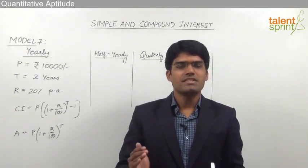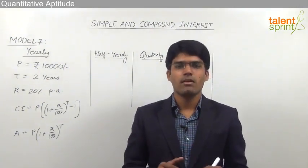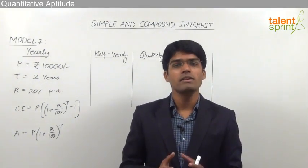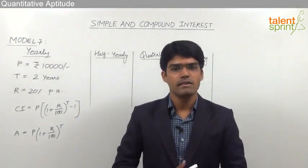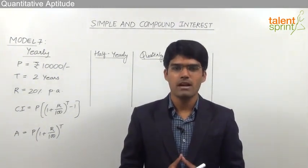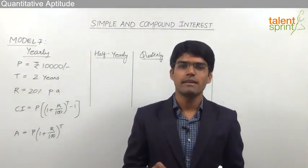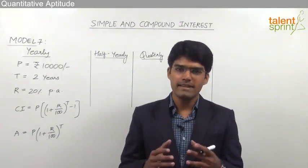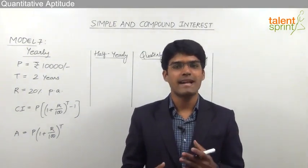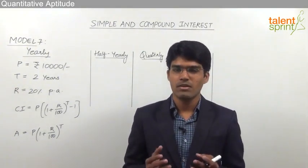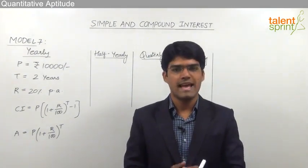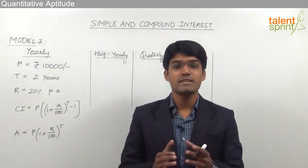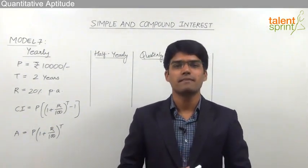In general, the principle changes at the end of each year because compounding is done on a yearly basis. But in some special cases, the compounding is done on a half yearly basis. That means the interest is calculated at the end of every 6 months, and if the interest is calculated after every 6 months, the principle also changes after every 6 months because it is a compounding procedure — as the interest is calculated it has to be compounded to the principal amount.